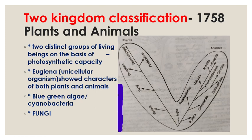Before we discuss about Archibacteria, let us discuss about some initial or traditional classification. From the very beginning, there were only two kingdom classifications which included plants and animals. These two distinct groups of living beings were based on photosynthetic capacity and the ability to move. Algae, which was immobile but photosynthetic, was kept in plants, and fungi, which was non-photosynthetic, was also kept in plants. So this entire system of classification was not satisfactory.